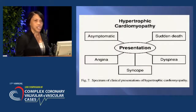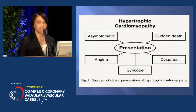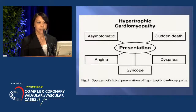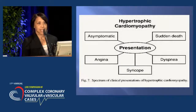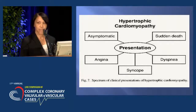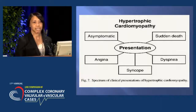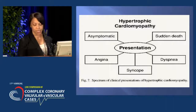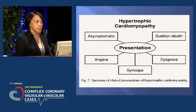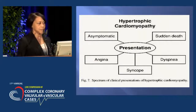Patients may present with cardiomyopathy in various ways — they may come in with dyspnea, syncope, or angina; they may be asymptomatic; or they may come in with sudden death. So if a patient presents with sudden death, it's something to consider that they may have had hypertrophic cardiomyopathy.